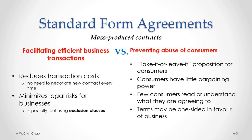With respect to preventing abuse of consumers, there is a concern that these agreements are a take-it-or-leave-it proposition. When a consumer is given a standard form agreement, there is little or no opportunity to negotiate any of the terms. The consumer either has to accept the contract or not enter the transaction at all. Consumers generally have very little bargaining power, and another large area of concern is that very few consumers read or understand what they are agreeing to. Thus, the terms in these agreements are quite often one-sided in favor of the business.